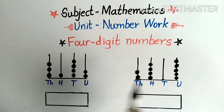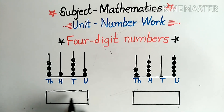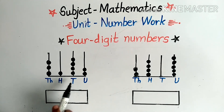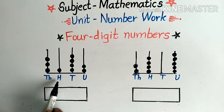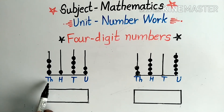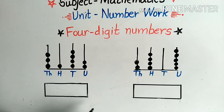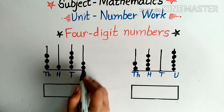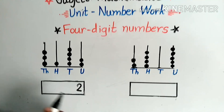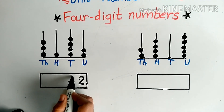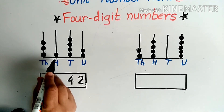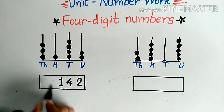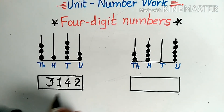Here there are some symbols, and with the help of these symbols we will write down a number. In the units place there are 2 bits, in the tens place there are 4 bits, in the hundreds place there is 1 bit, and in the thousands place there are 3 bits. These bits represent beads placed in each column. So for units we write 2, for tens we write 4, for hundreds we write 1, and for thousands we write 3.